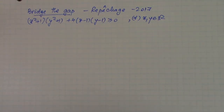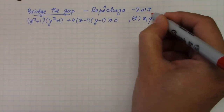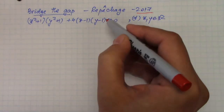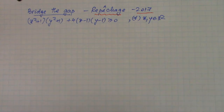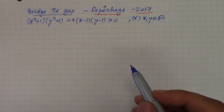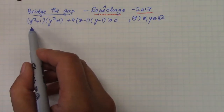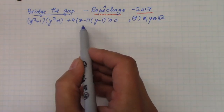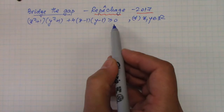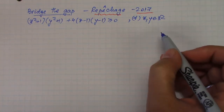This first problem that I'm going to discuss was a 2017 problem that students were supposed to solve at the Répechage contest, one of the contests that qualify students at the Canadian Olympiad. The problem said: show that (x² + 1)(y² + 1) + 4(x − 1)(y − 1) is greater than or equal to 0 for any real numbers x and y.